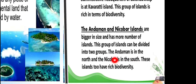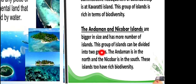This group of islands is situated in the Bay of Bengal. It is very close to the equator, which is why these islands remain warm. There is also a lot of variety in the flora and fauna found here.